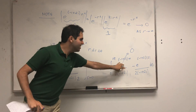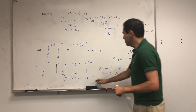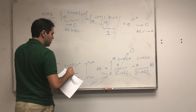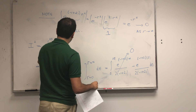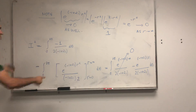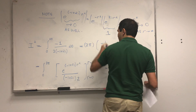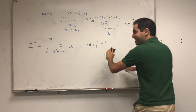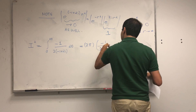Therefore, this boundary term goes to 0, and what we're left with is just the constant term. So what we really have is I squared equals the integral from 0 to 2π of minus 1 over 2 times minus 1 plus 2i dθ. But this is just a constant, so it becomes 2π times that value: minus 1 over 2 times minus 1 plus 2i.